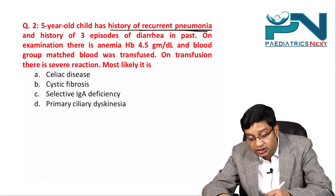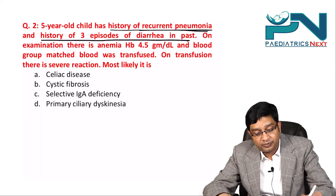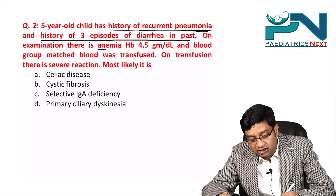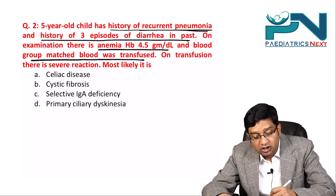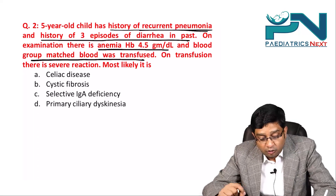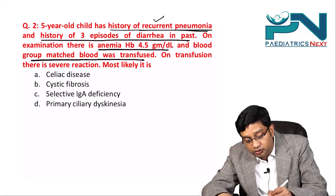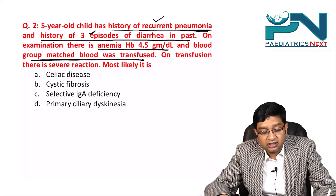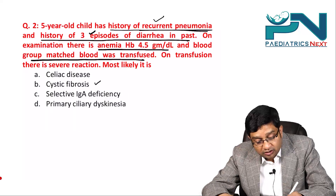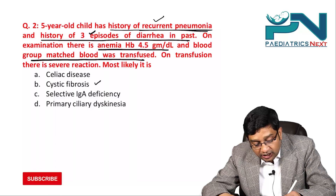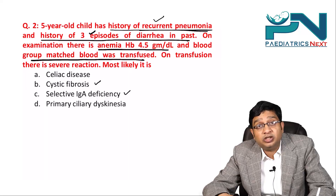Question 2: A 5-year-old child has history of recurrent pneumonia and three episodes of diarrhea in the past. On examination there is anemia; blood group matched blood was transfused but there was a severe reaction. This presentation of recurrent pneumonia with diarrhea could suggest cystic fibrosis or IgA deficiency.